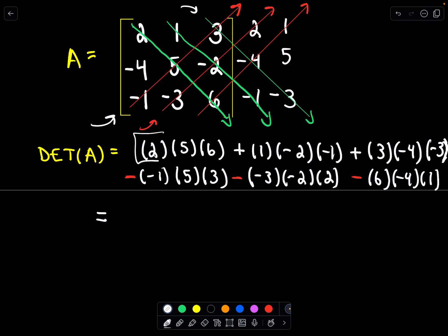So let's see if we can do this. Our first term, 2 times 5 is 10 times 6. That's 60. It looks like we'll get a positive 2 for our next value. And then I've got a 3 times a negative 4 times a negative 3. That looks like that's going to give me a positive 36.